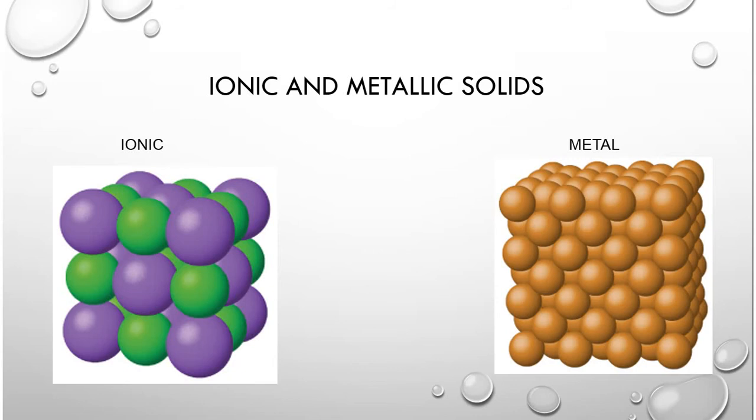So when we talk about solids we typically talk or think in terms of crystallization or closely packed particles. Now best examples usually are something like ionic solids or metallic solids. Ionic solids you have cations and anions directly next to one another.